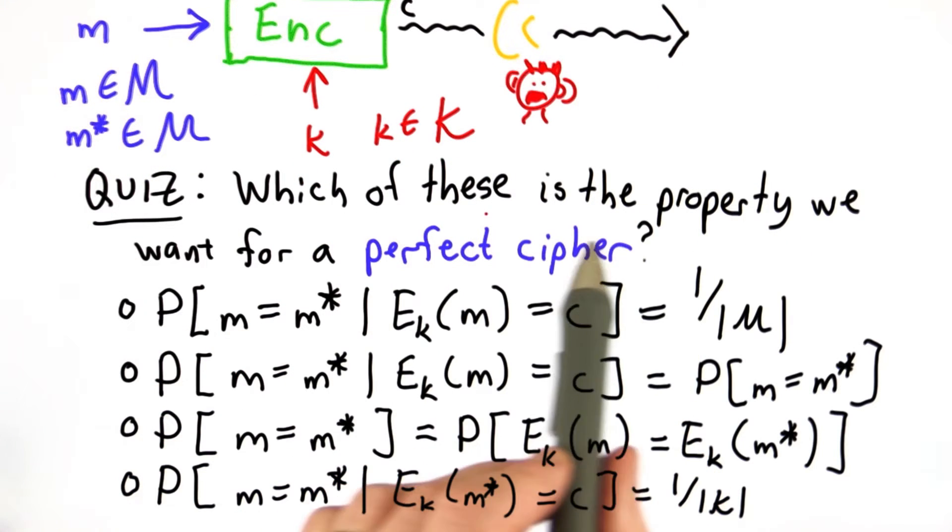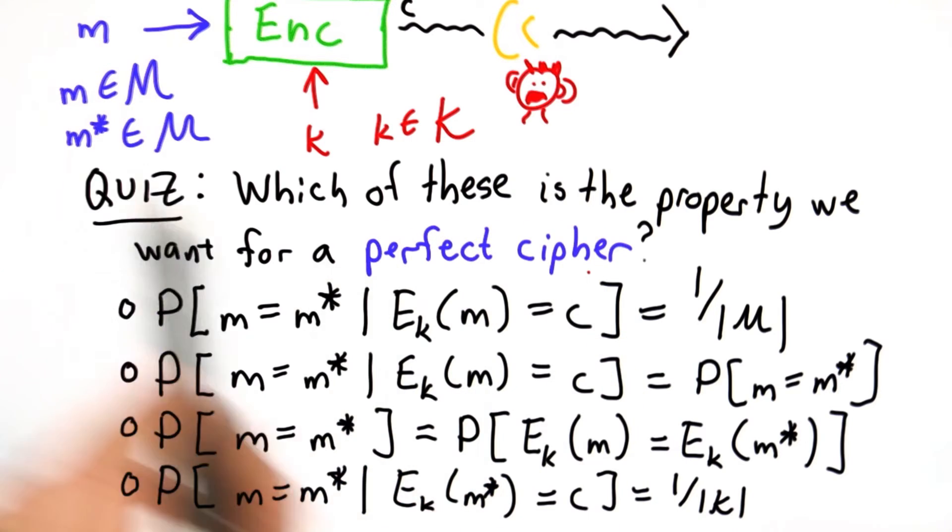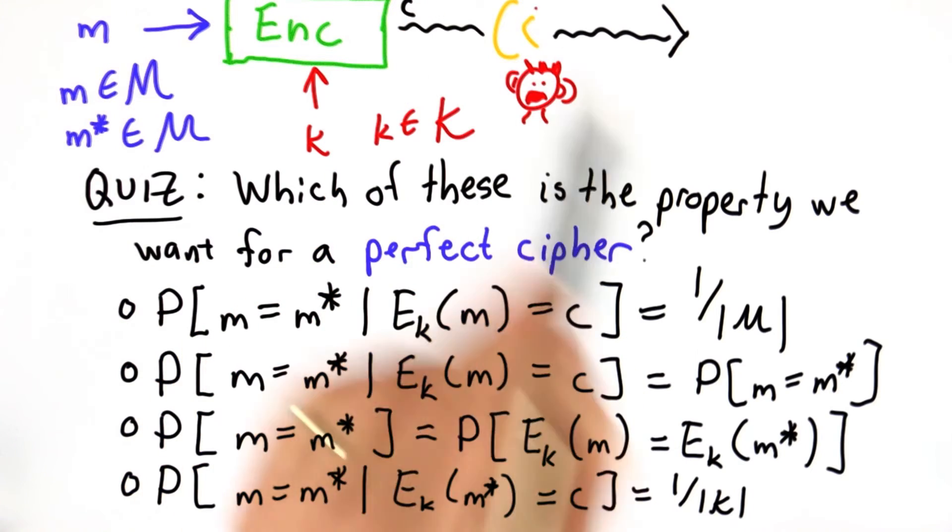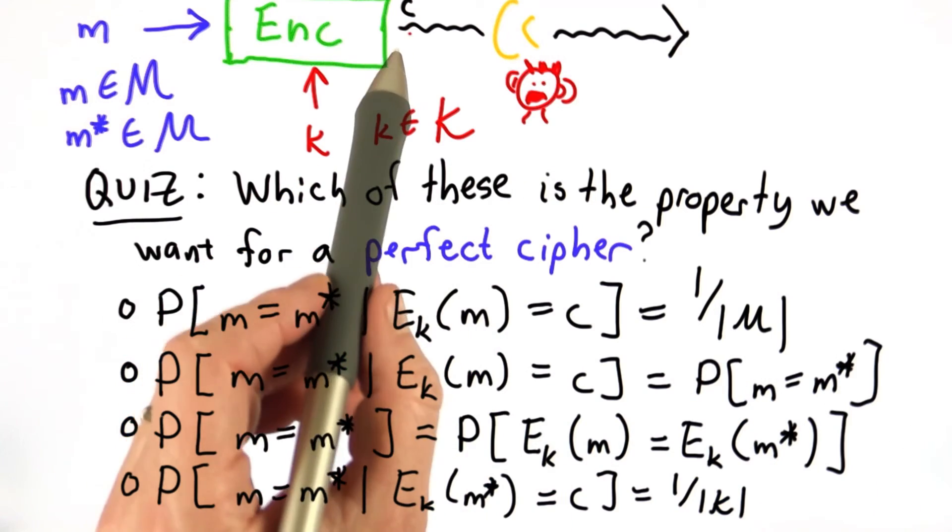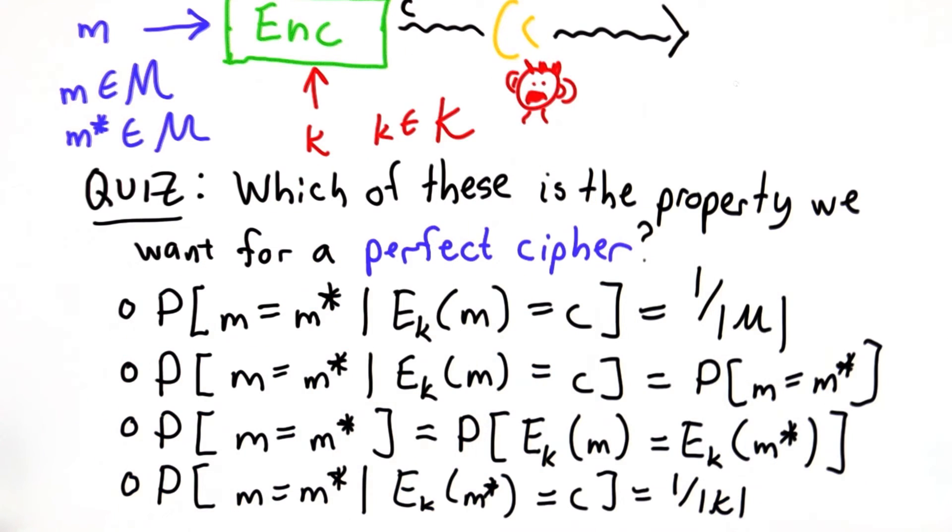For this quiz, your goal is to understand how we can formally define what a perfect cipher is. This is the scenario: We have an attacker who's heard a ciphertext. We want to know that by hearing just the ciphertext, the attacker has learned nothing new about the message.